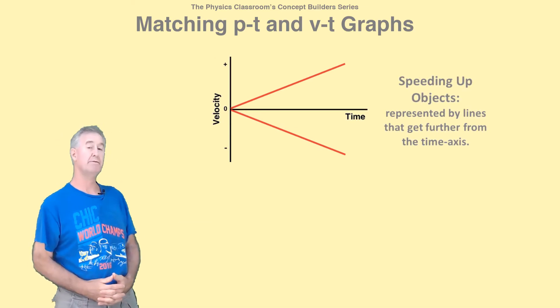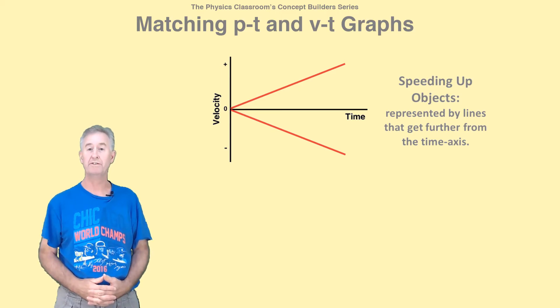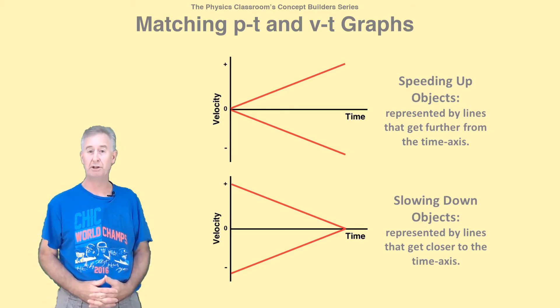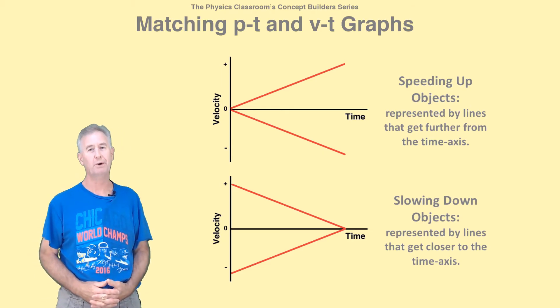A line that gets further from the V equals zero mark over the course of time is speeding up or getting faster. But a line that gets closer and closer to the V equals zero mark is slowing down or getting slower.